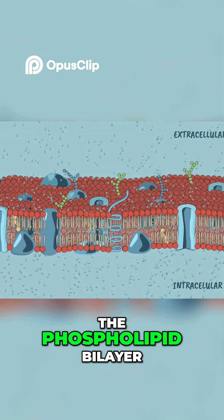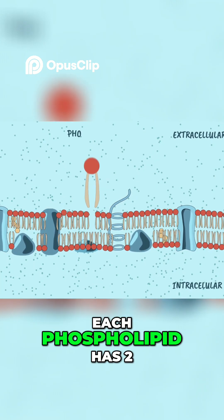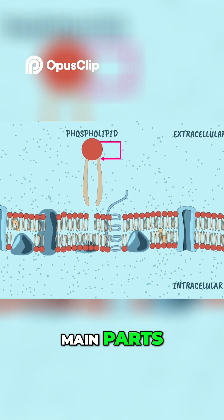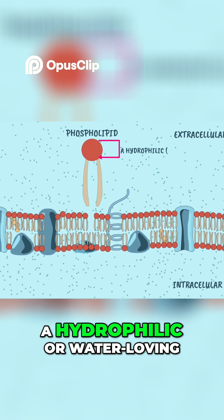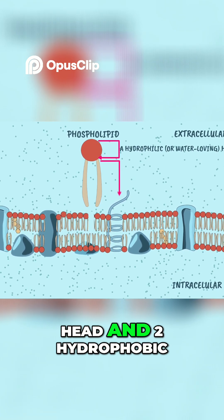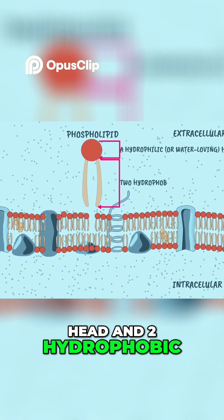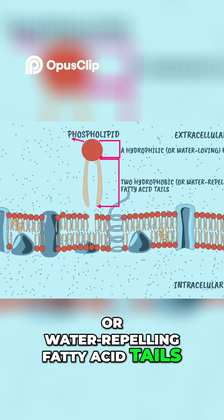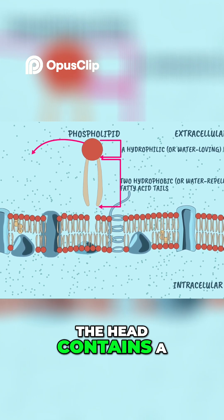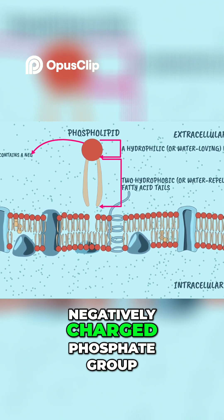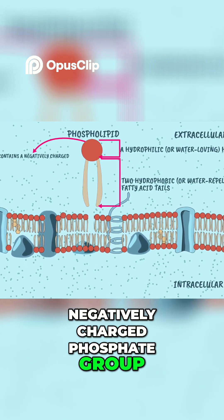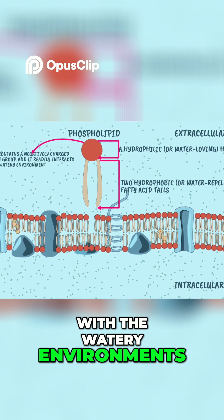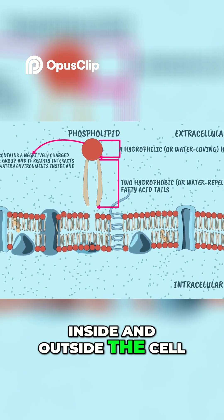The phospholipid bilayer. Each phospholipid has two main parts: a hydrophilic, or water-loving, head and two hydrophobic, or water-repelling, fatty acid tails. The head contains a negatively charged phosphate group, and it readily interacts with the watery environments inside and outside the cell.